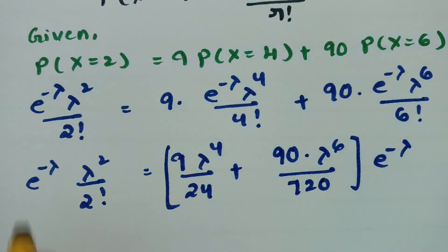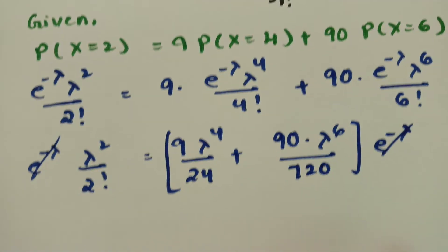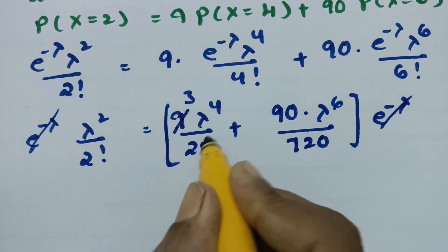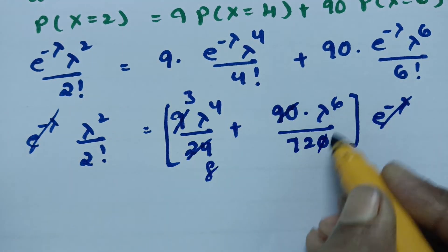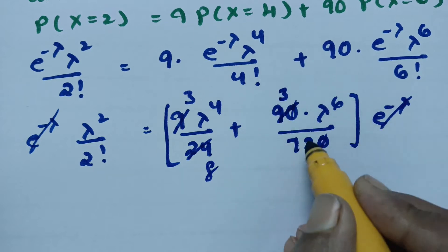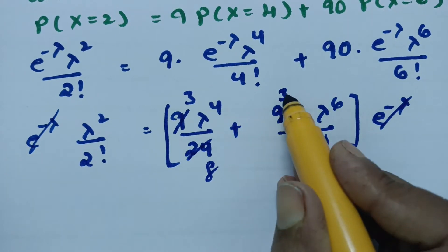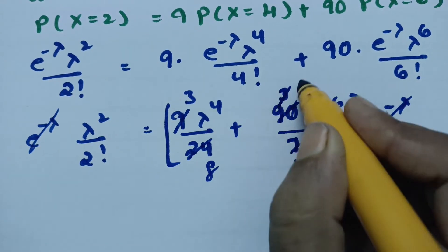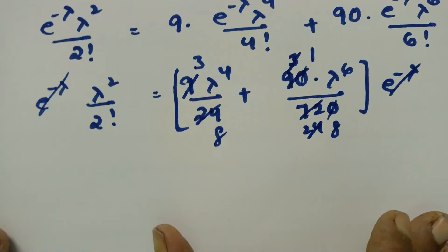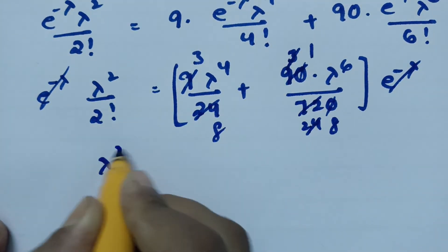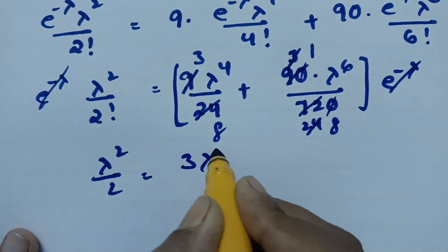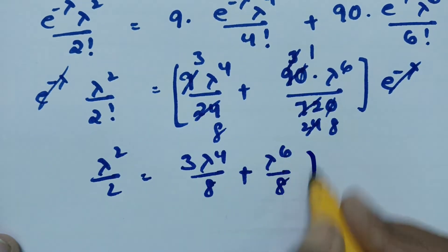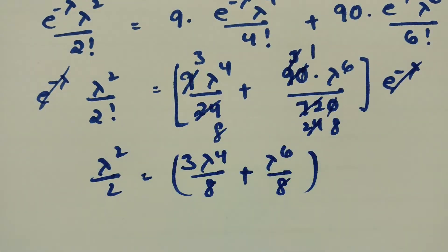Canceling e to the power minus lambda from both sides, and simplifying the coefficients, we get: lambda squared by 2 equals 3 times lambda to the 4 by 8 plus lambda to the 6 by 8.